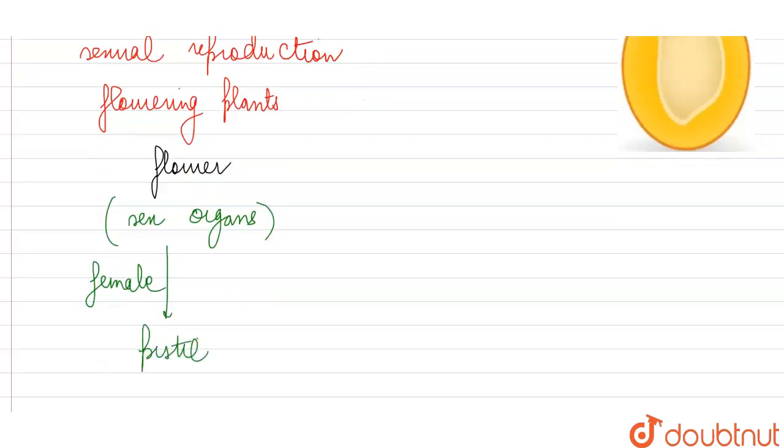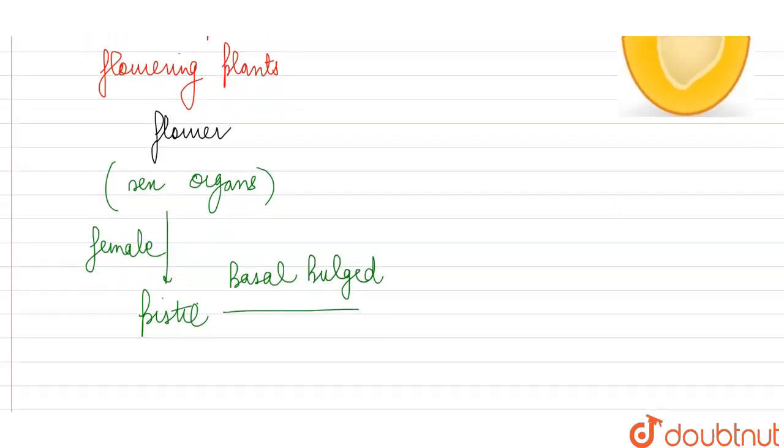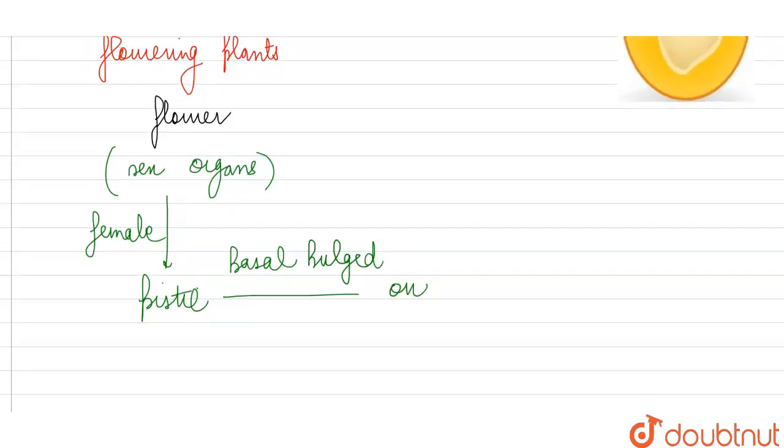In this pistil, its lower part, its basal part, is quite bulged or enlarged or swollen. So this enlarged lower part is known as the ovary, and inside the ovary the ovules are enclosed. So the female gamete or the egg we are going to find inside these ovules.